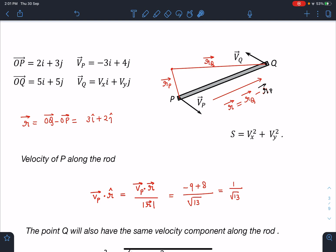The velocity of these points is also known to us. This is -3i + 4j and this is Vx i + Vy j. It can be in any random direction also. So let's find out Rq - Rp. This will become 3i + 2j. So R vector is also known to you.